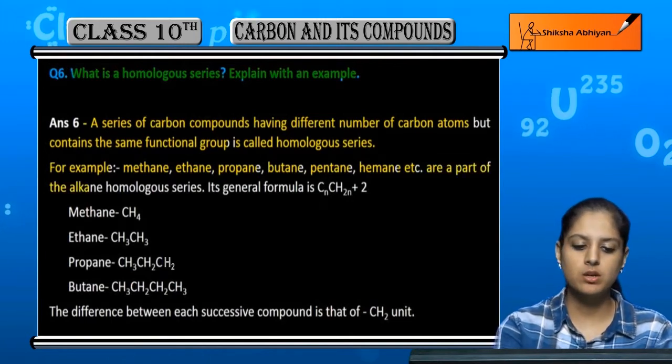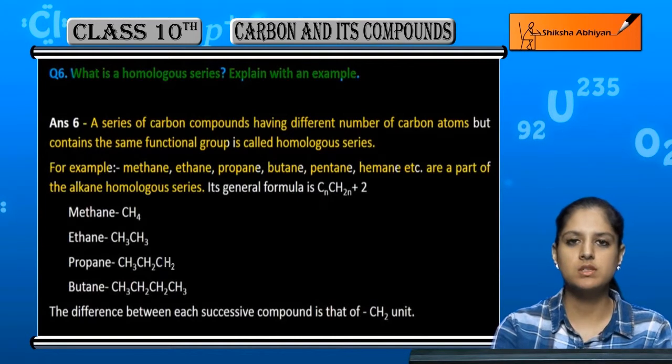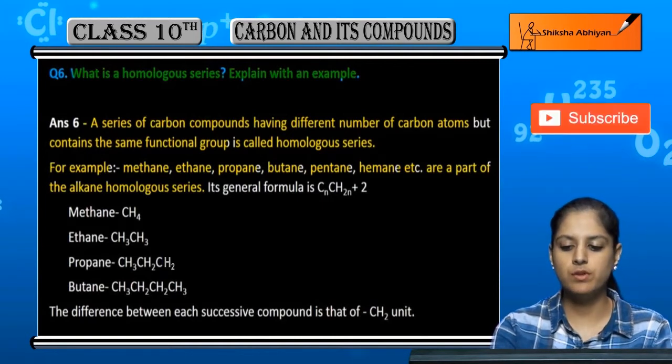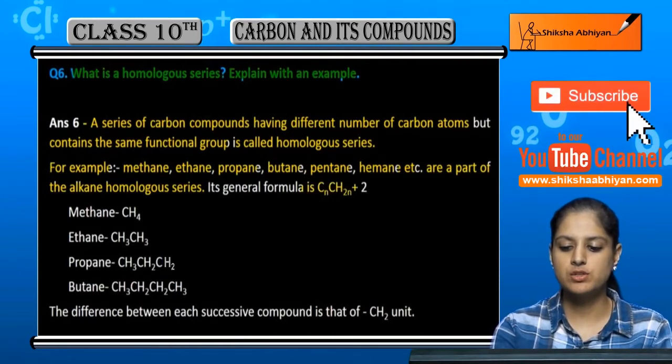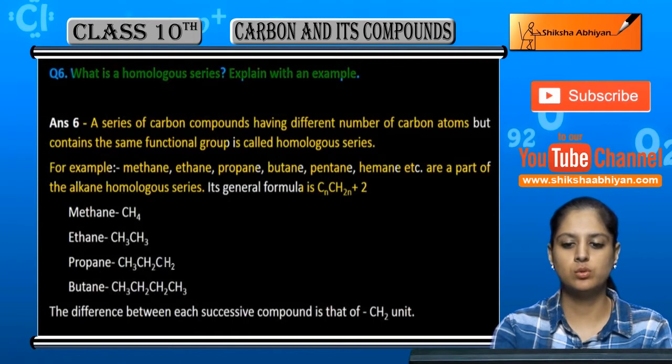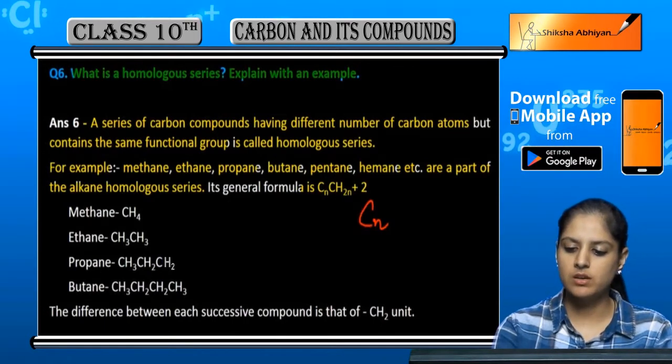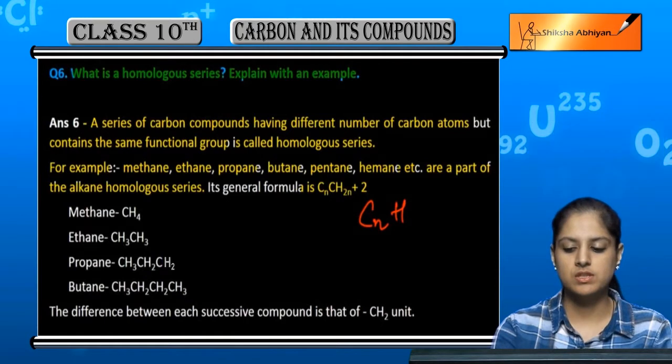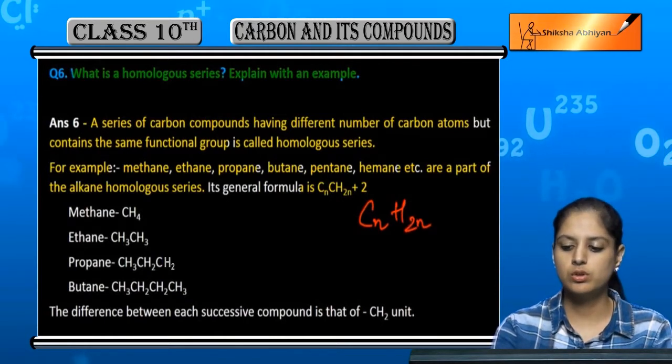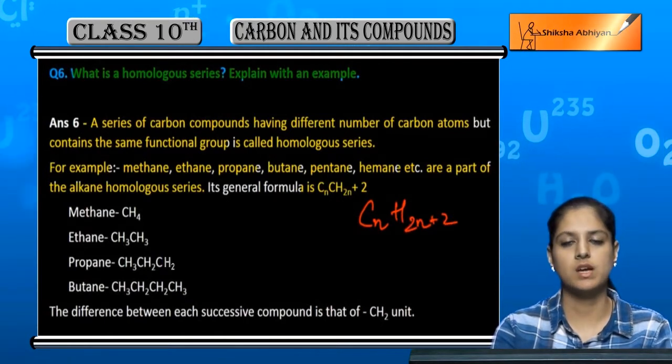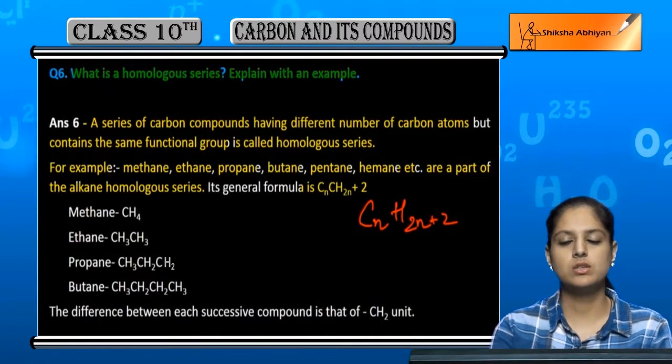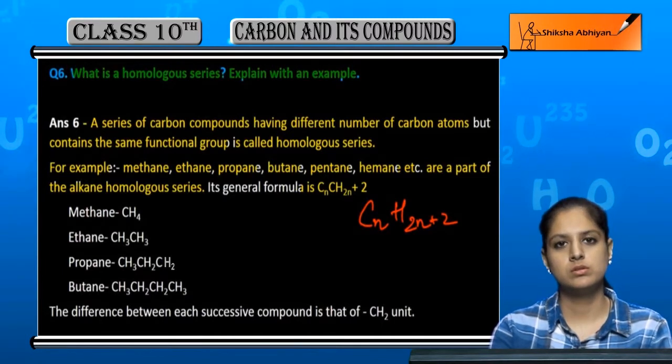These are part of the alkane homologous series. Its general formula is CnH2n+2, which means that for Cn carbon atoms, H will be 2n+2. Like if C is 1, 2 into 1 plus 2 will be 4, that is CH4. If C is 2, 2 into 2 that is 4 plus 2 will be 6, C2H6.